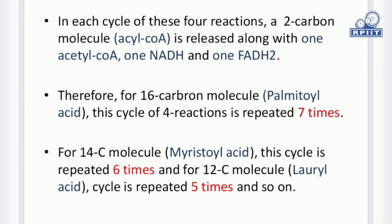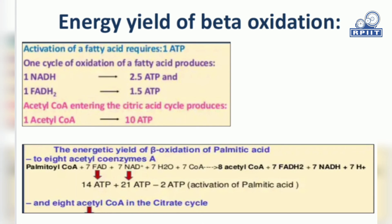For a 16-carbon molecule like palmitic acid, this cycle of four reactions is repeated 7 times. For a 14-carbon molecule like myristic acid, this cycle is repeated 6 times. For a 12-carbon molecule like lauric acid, this cycle is repeated 5 times, and so on. One cycle produces one NADH equivalent to 2.5 ATP, one FADH2 equivalent to 1.5 ATP, and one acetyl coenzyme A equivalent to 10 ATP. You can count the total ATP production for different fatty acid molecules according to their number of carbon atoms.